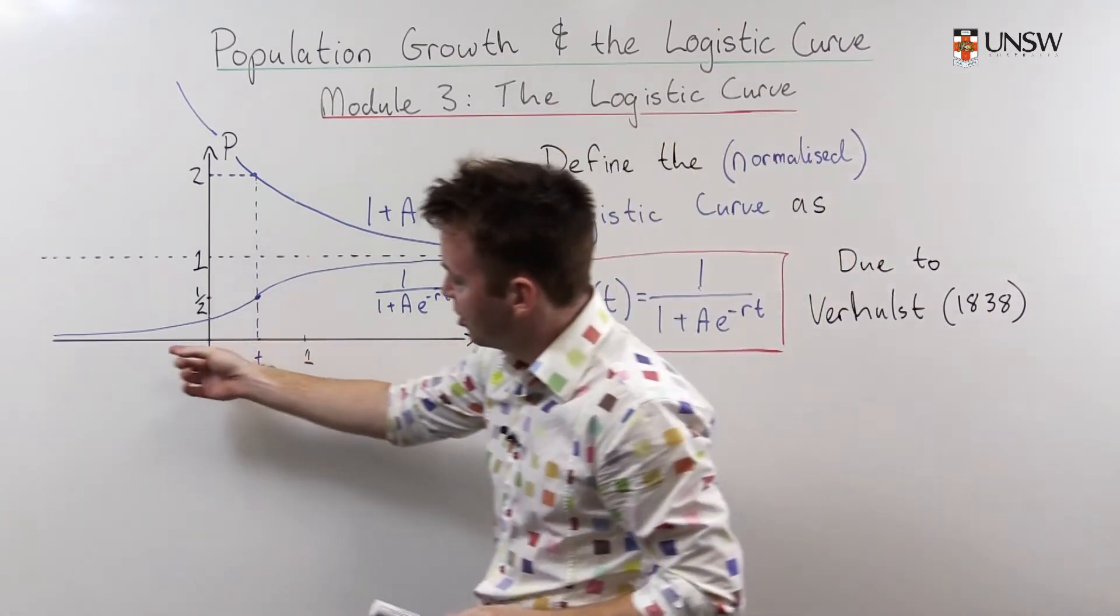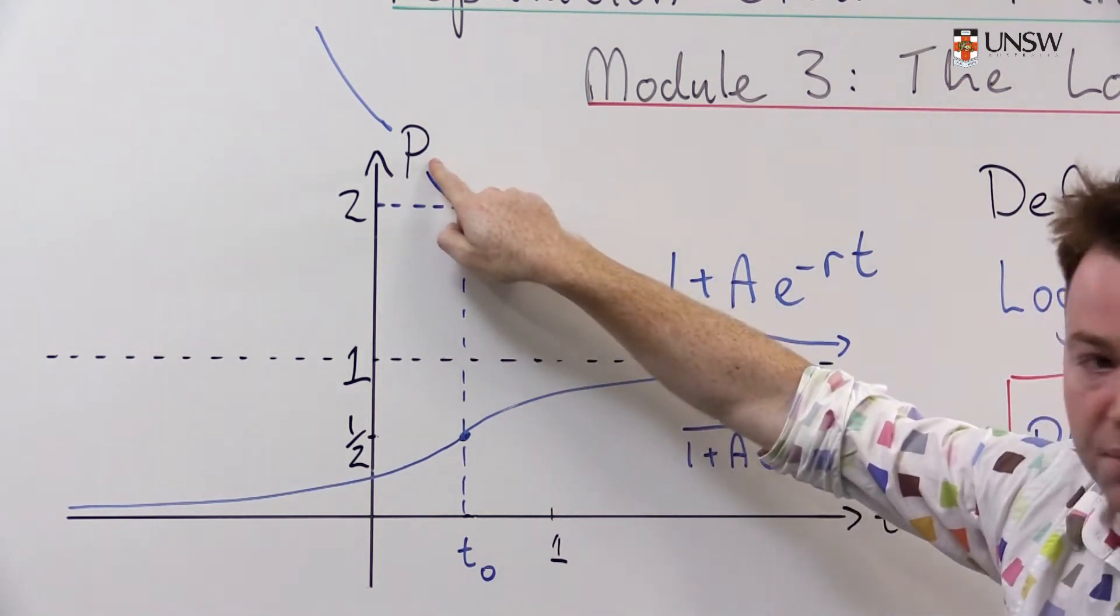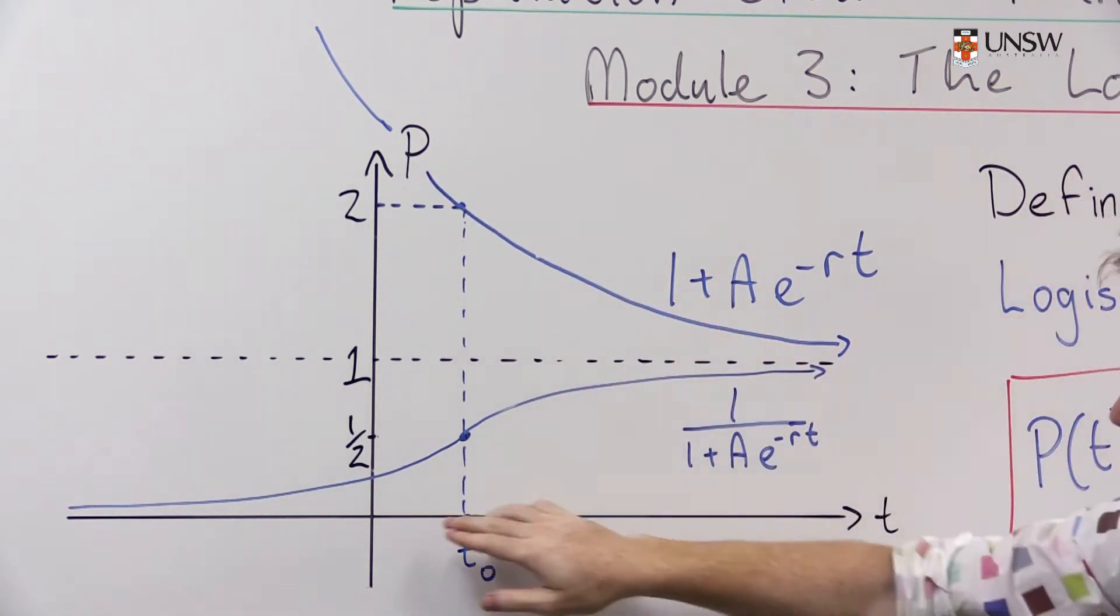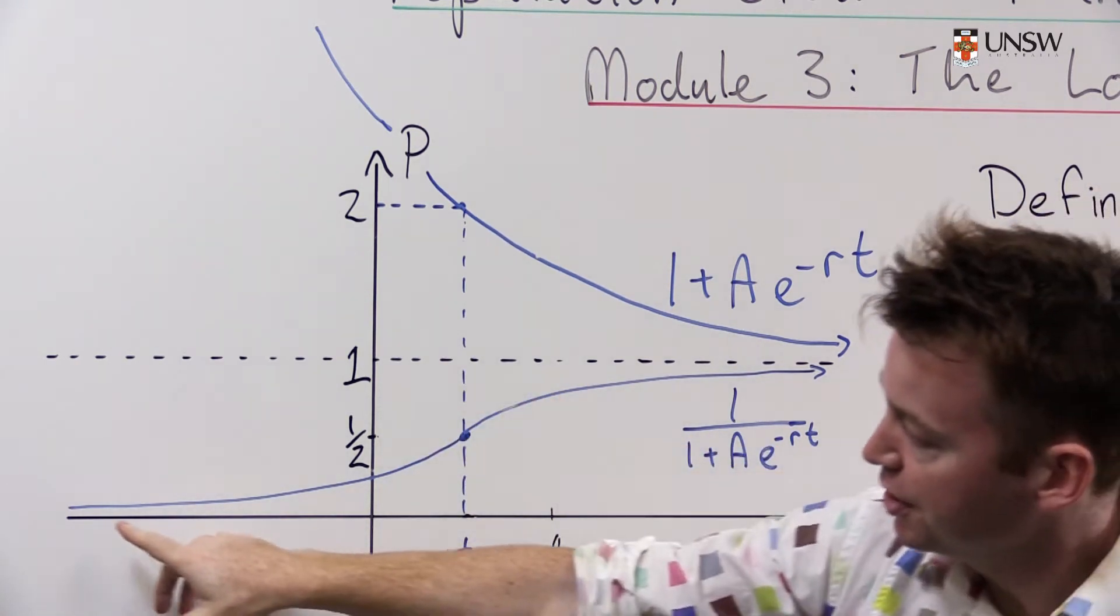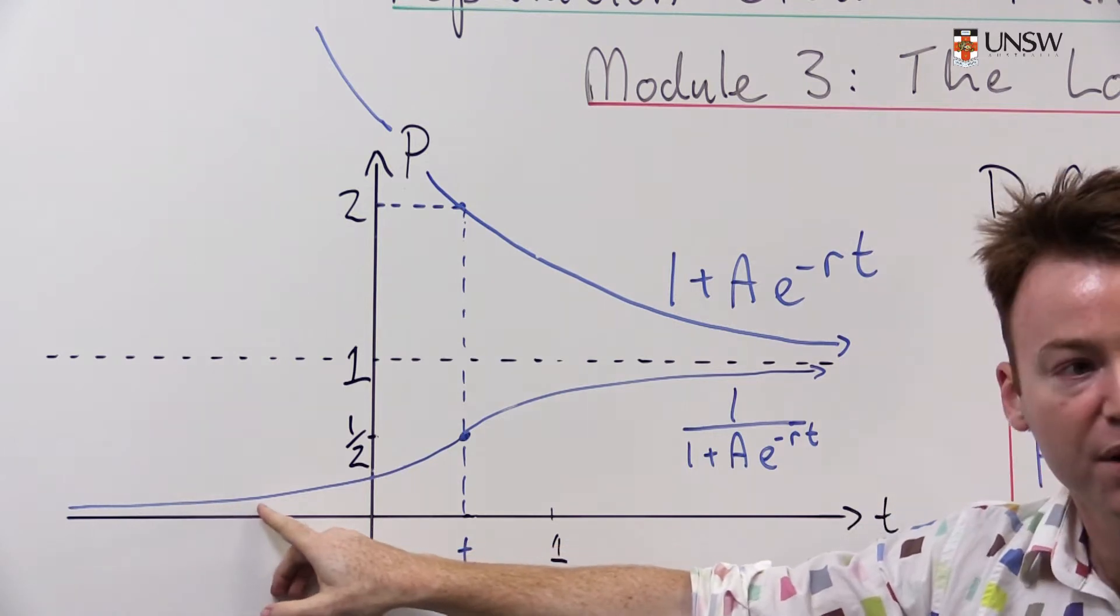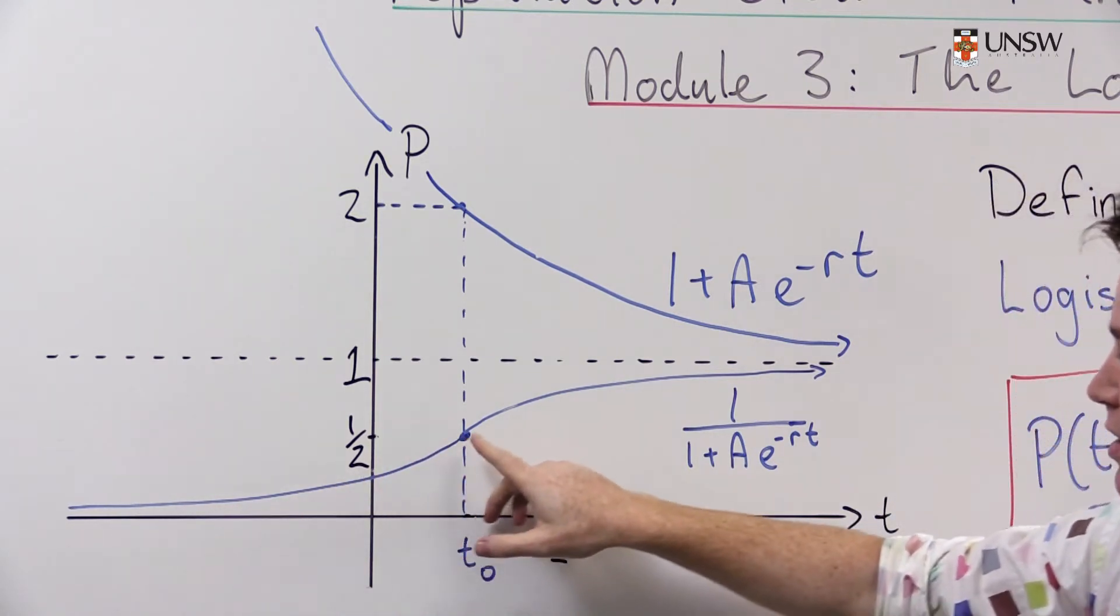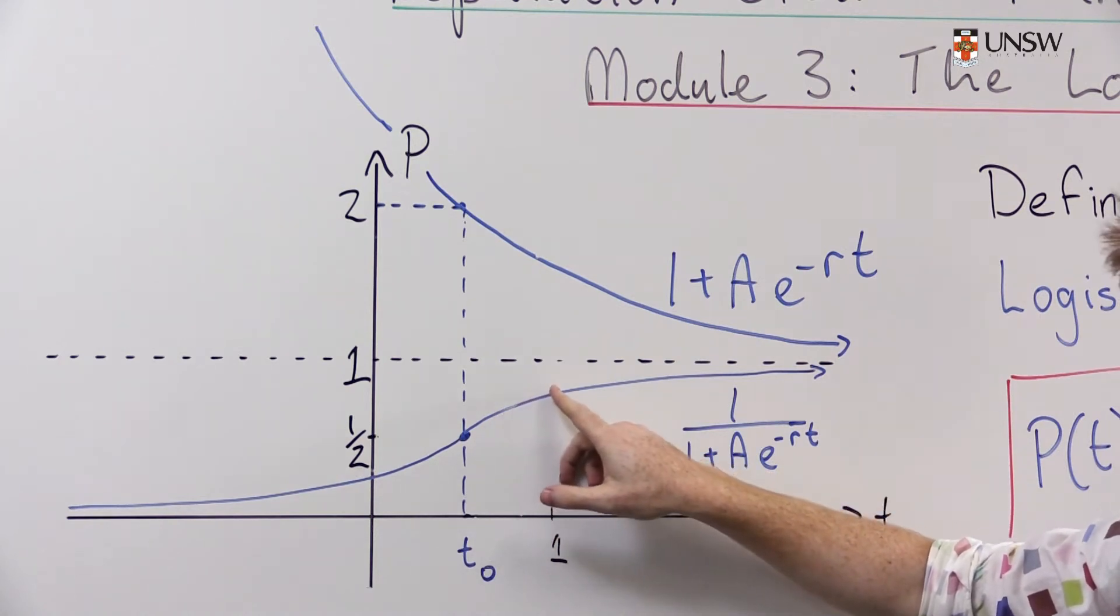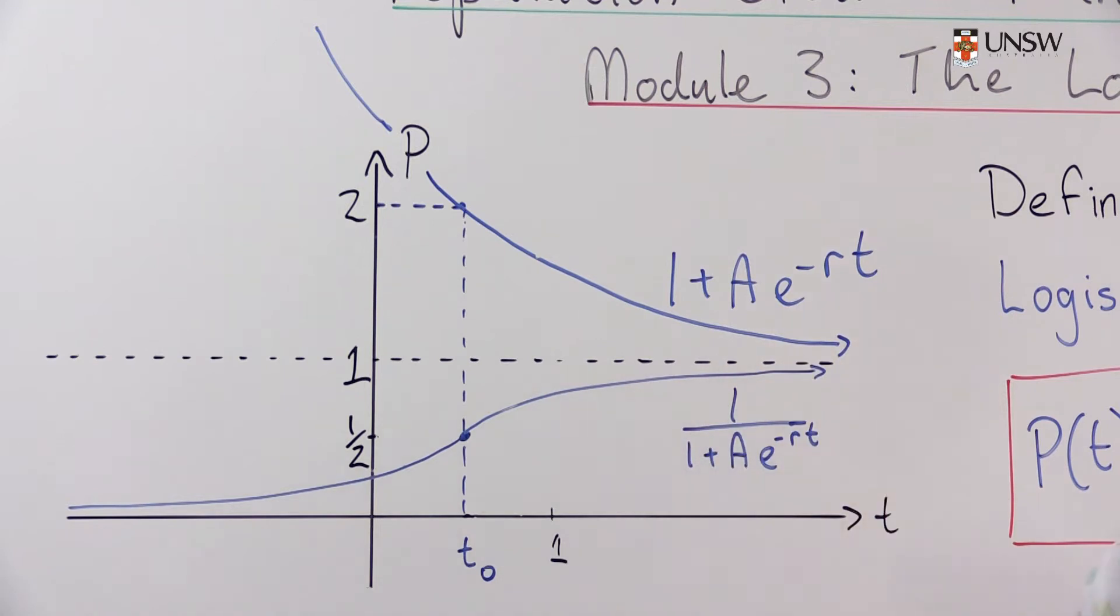That's what we see happening over here. Here we have a graph of the logistic curve. So we have population up here, time over here. We've normalized it so the population eventually grows to one. Initially things grow quite quickly only limited by the amount of population there is at the particular time. And after some point resources become a bit more scarce and the population peters out and eventually grows to this limit of one.